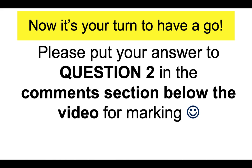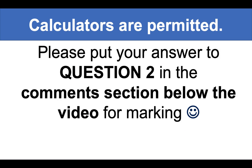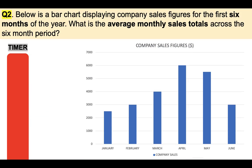Please put your answer to question two in the comments section below the video for marking. On each question that I want you to try, there is a timer. You can use calculators if you want to, and that timer is 30 seconds in total. If you can answer this in 30 seconds, you are doing really well. If you find you need more time, please pause the video. Question two: below is a bar chart displaying company sales figures for the first six months of the year. What is the average monthly sales total across the six-month period?